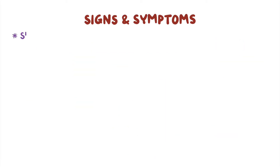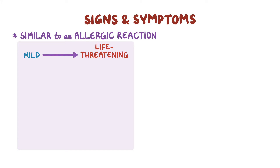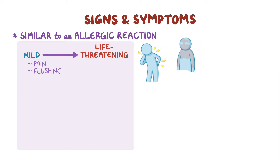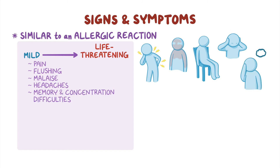Generally, the signs and symptoms of mastocytosis are similar to an allergic reaction. They can range between categories and from mild to life-threatening. Some examples are pain, flushing, malaise, headaches, and memory and concentration difficulties.